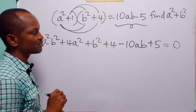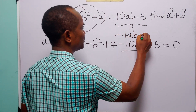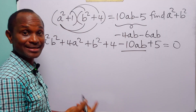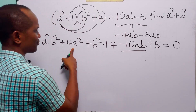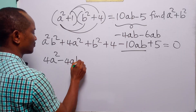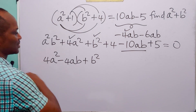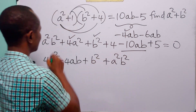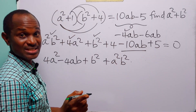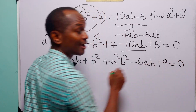The secret to solving this problem is to break apart the minus 10ab term into minus 4ab minus 6ab. Of course, minus 4ab minus 6ab gives us minus 10ab. This is how we reorder the left-hand side: we have 4a squared minus 4ab plus b squared — these three are taken — and we are left with a squared b squared minus 6ab plus 9, which is equal to 0.